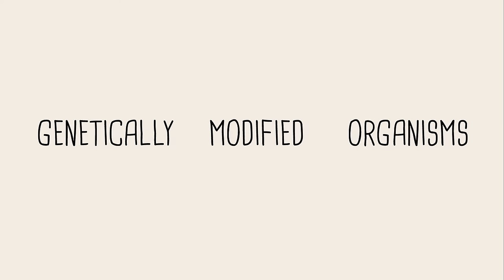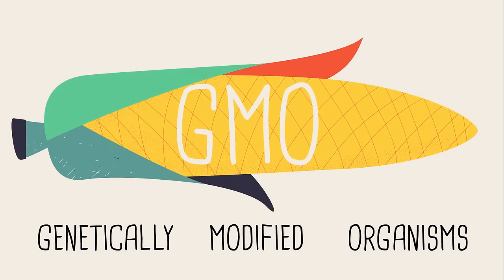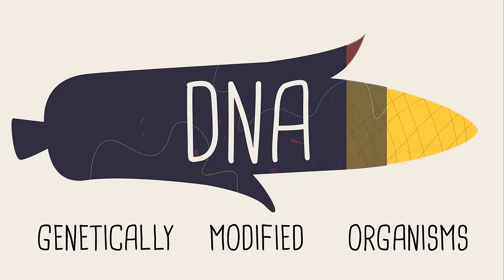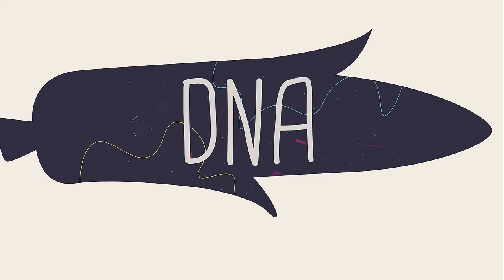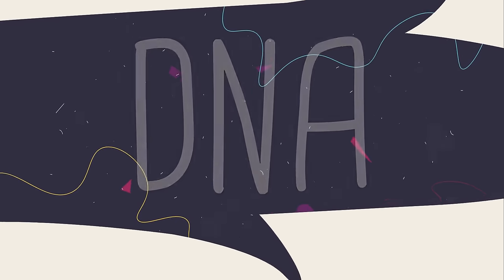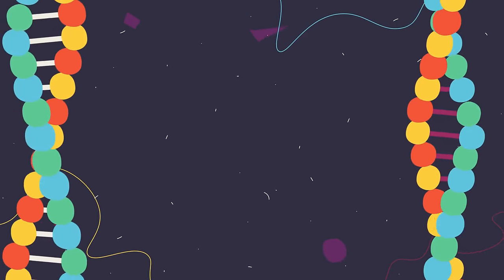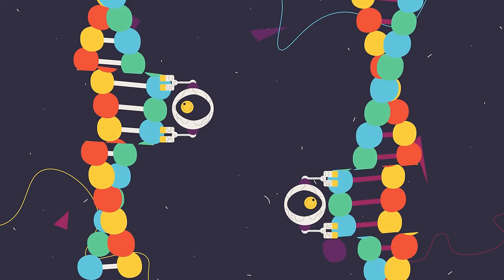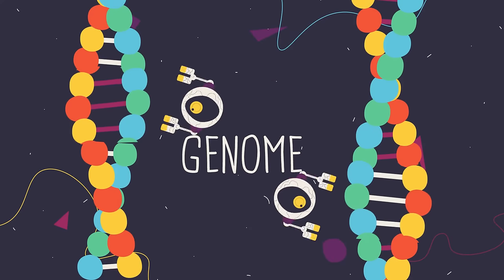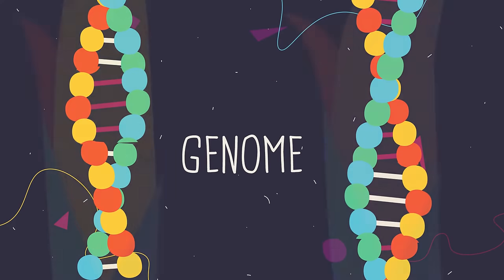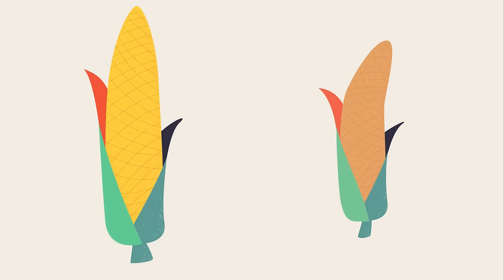Genetically modified organisms, or GMOs, have had their DNA artificially modified by humans using modern genetic manipulation techniques. By changing the DNA — so changing the genome of an organism — means we can change its characteristics.